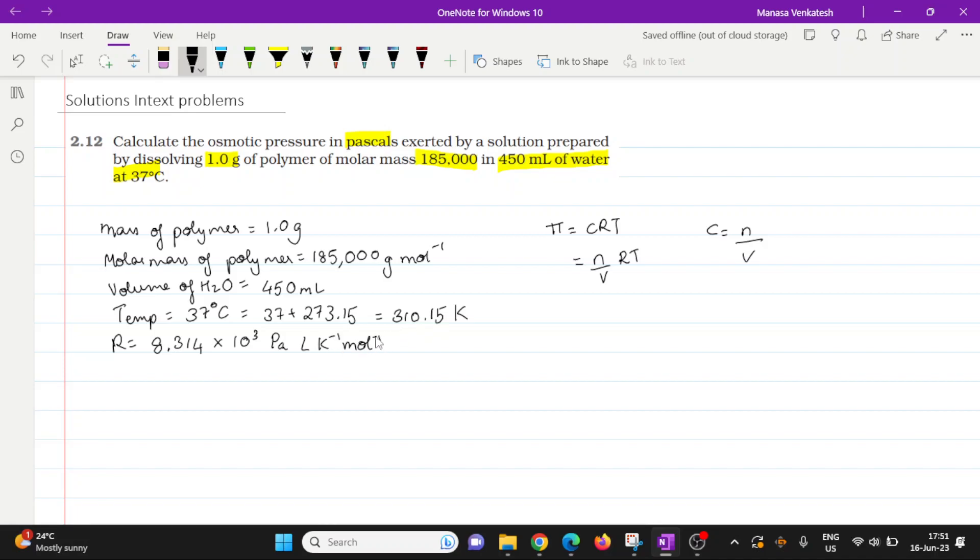Now if you notice, the volume is in liters in this case. So we need to convert the volume of water from milliliters to liters. So that will be 450 divided by 1000, and that is going to give us 0.450 liters. Okay, so we have the volume, we have R, we need to calculate the value of n.